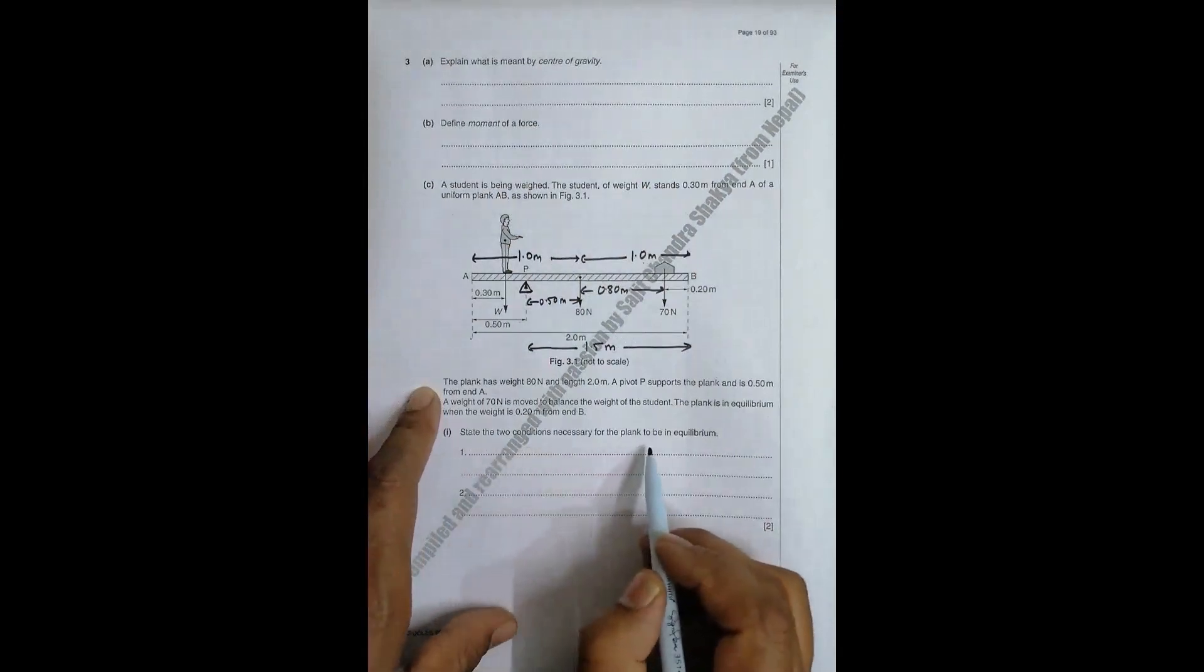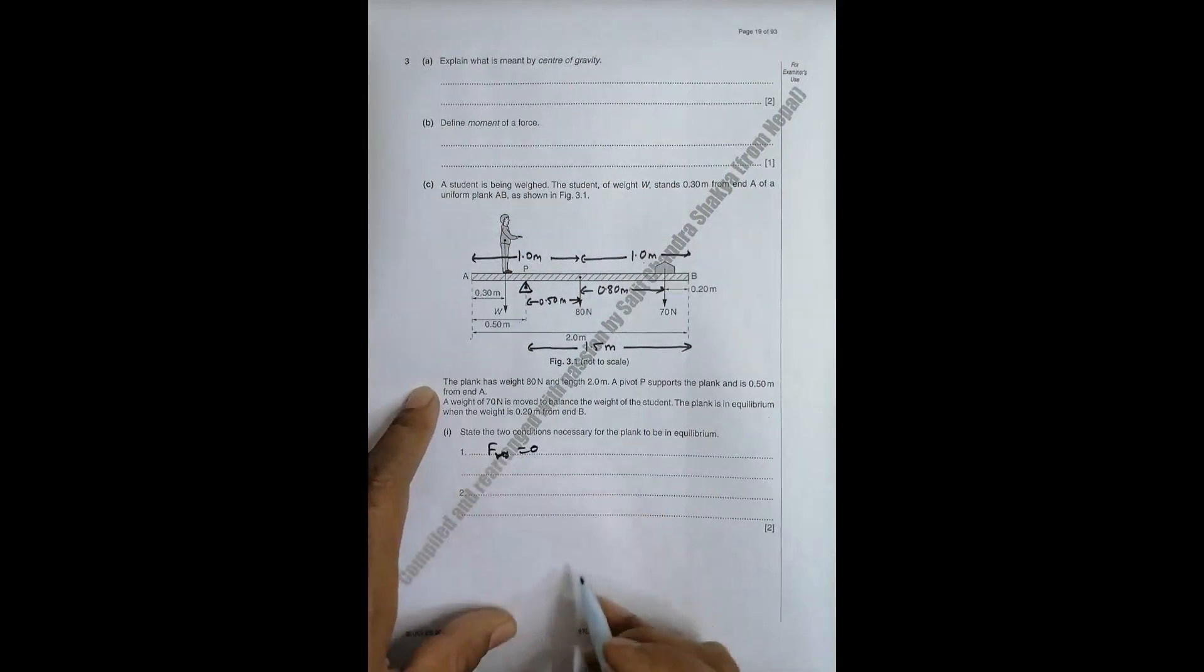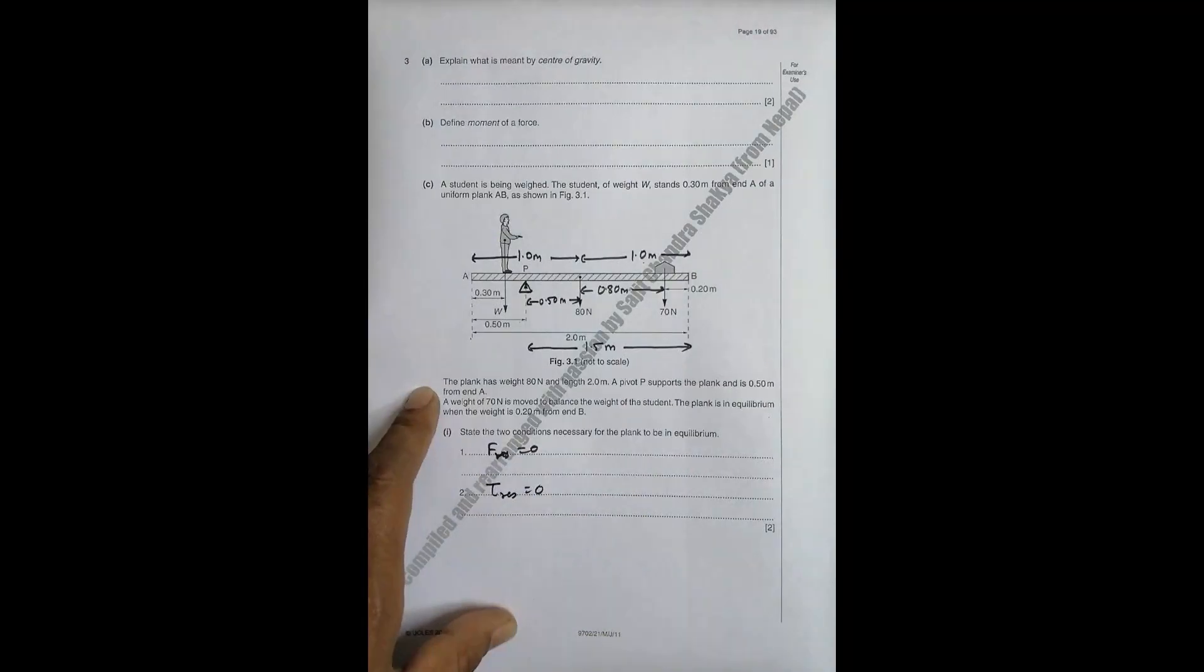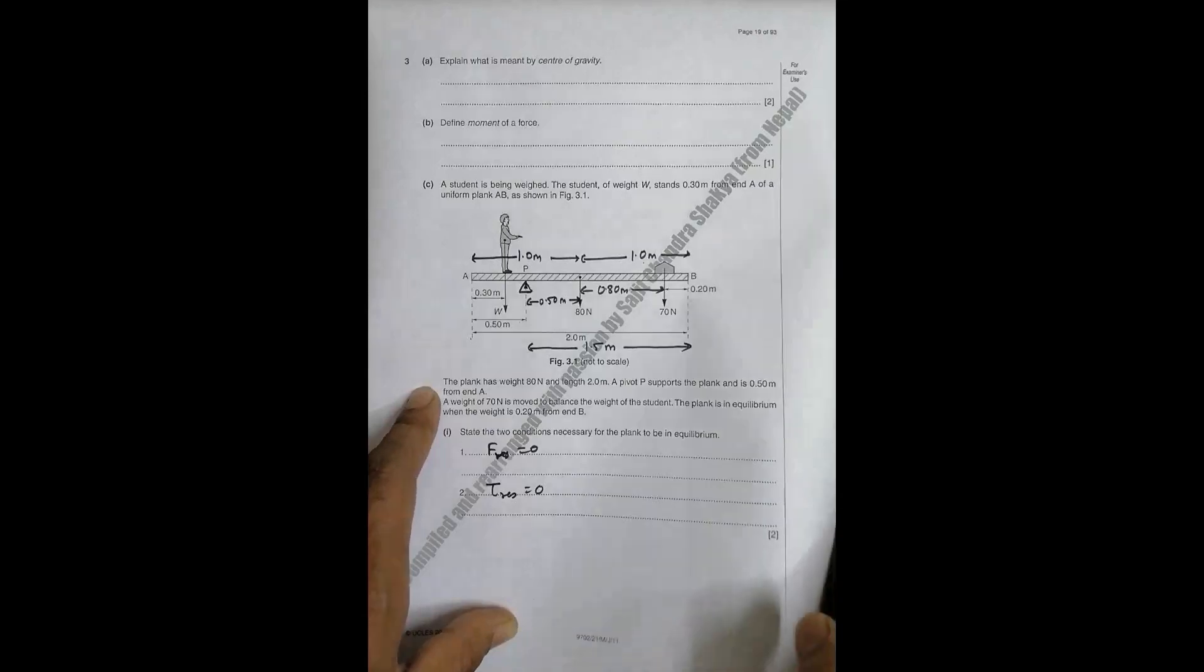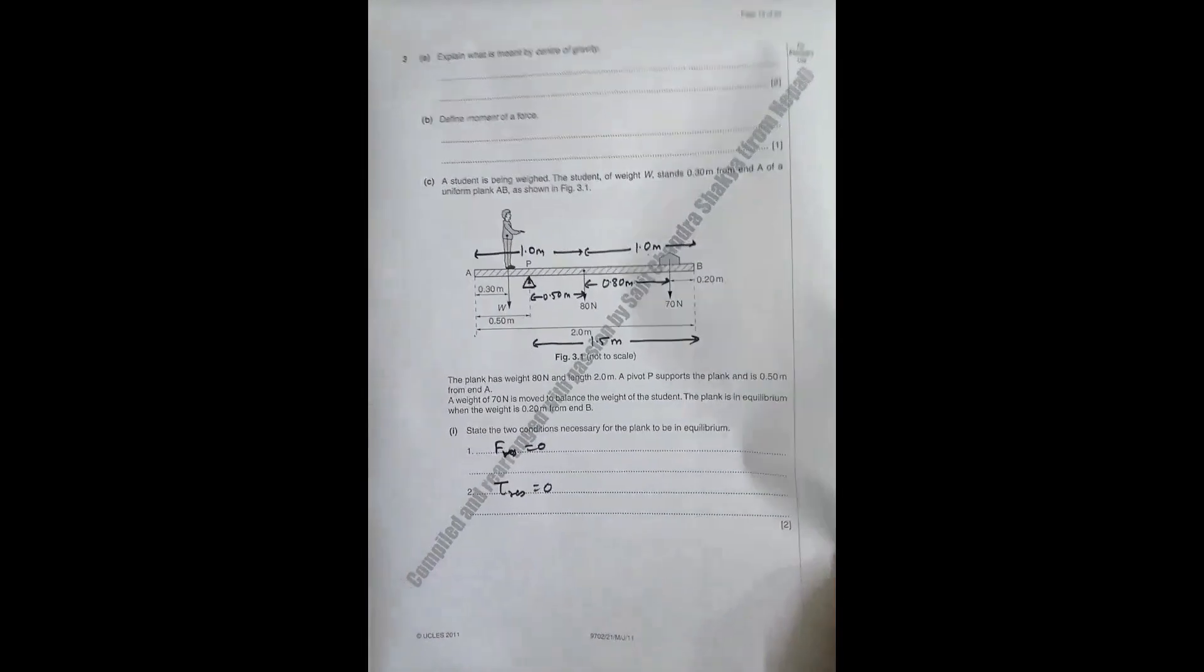Now, state 2 conditions for the plank to be in equilibrium. The first thing is the resultant force should be equal to 0. The next thing is the resultant torque should be equal to 0. Or we can say the sum of the torques or moments should be equal to 0, or the clockwise torque should be equal to anticlockwise torque or moment.